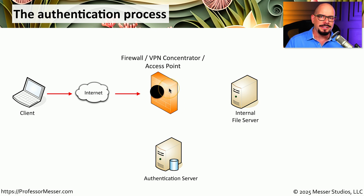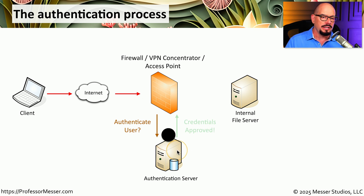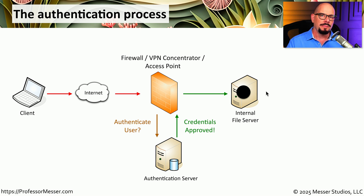The VPN concentrator doesn't have any authentication information to verify from, so it sends this request down to an authentication server asking to verify if the username and password is correct. The authentication server evaluates your login credentials, and if they are correct, it sends a message back saying those credentials have been approved. At that point, the VPN concentrator allows you access to the inside of the network.